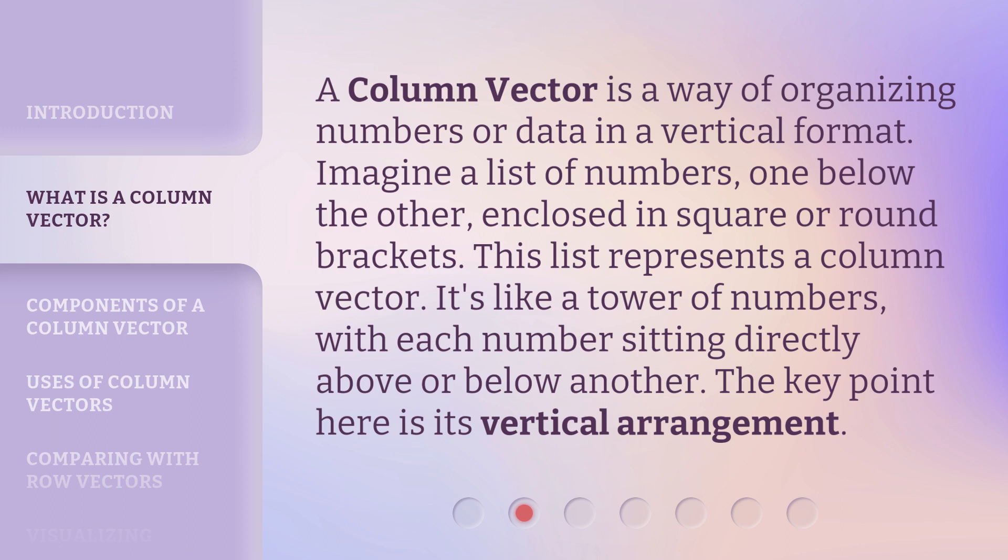A column vector is a way of organizing numbers or data in a vertical format. Imagine a list of numbers, one below the other, enclosed in square or round brackets. This list represents a column vector.